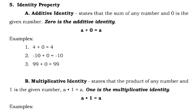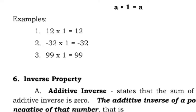For multiplicative identity: the product of any number and 1 is the given number. 1 is called the multiplicative identity, so A times 1 equals A. For example: 12 times 1 equals 12; negative 32 times 1 equals negative 32; 99 times 1 is 99; and 1 million times 1 is also 1 million.